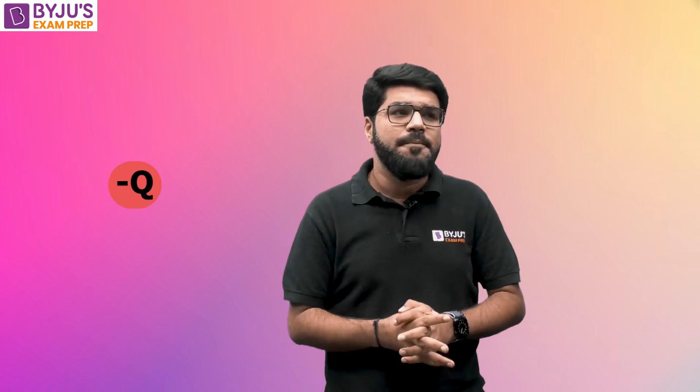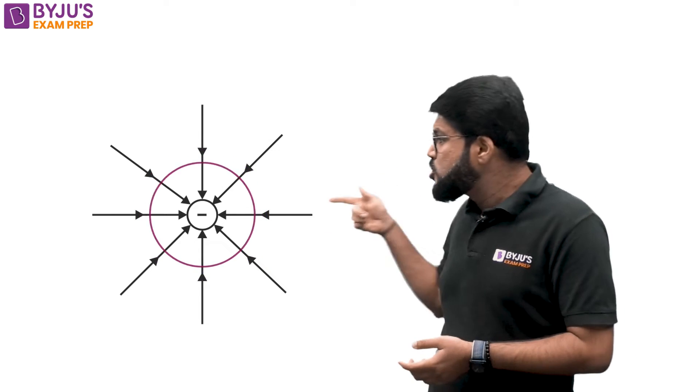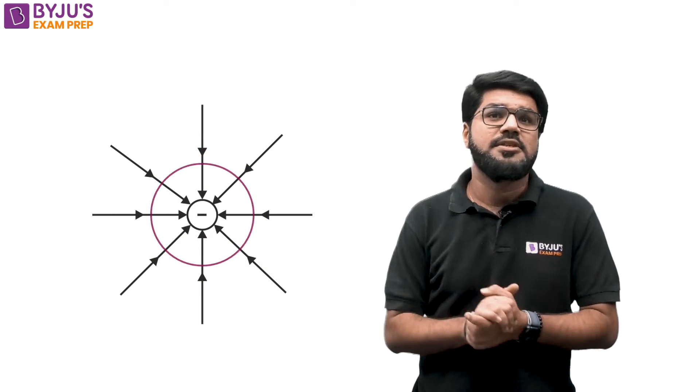Similarly, if we have the source charge as negative — considering a positive test charge, which we always take as reference — suppose the source charge is a negative charge. Between the source charge and the test charge, there is going to be a force of attraction, meaning the test charge is going to be attracted towards this negative charge from any direction. This representation is made by showing incoming lines to the negative charge — the electric field lines are shown coming towards it.